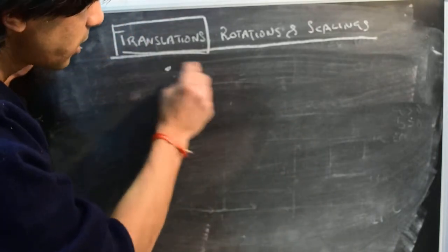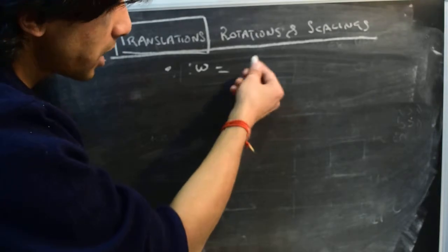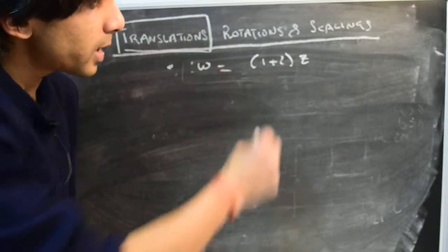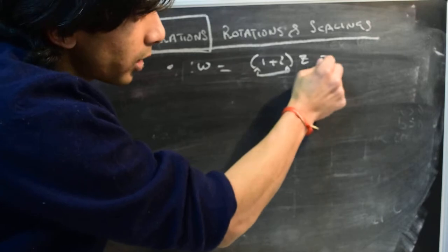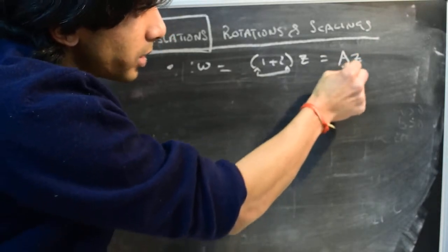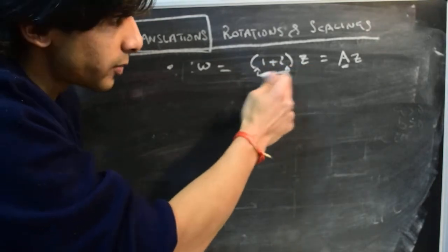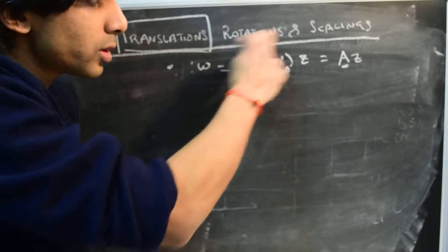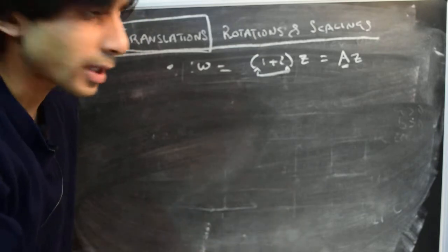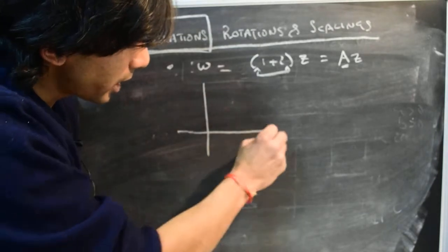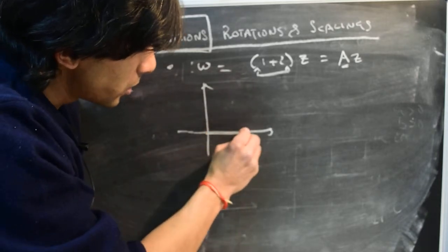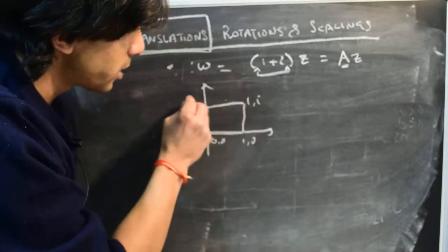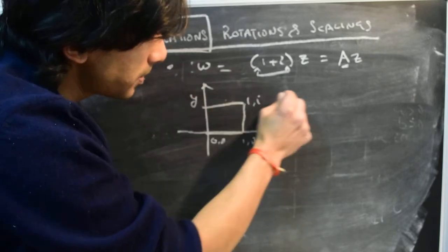Now let's look at another example. Consider the mapping w = (1 + i)z. This is multiplication of the complex variable z by the complex constant (1 + i). We've already seen in a previous video that multiplication corresponds to rotations and scalings. Let's see how that comes about. We'll again use the unit square in the z-plane going from the origin to (1,0) to (1,i) to (0,i).